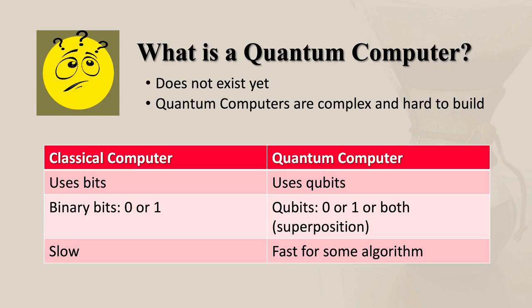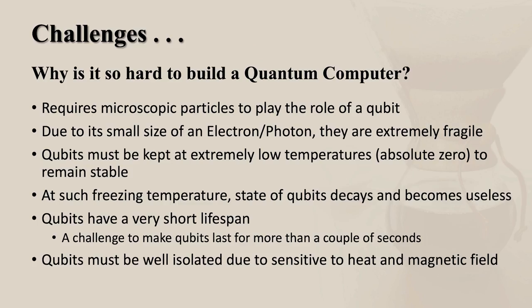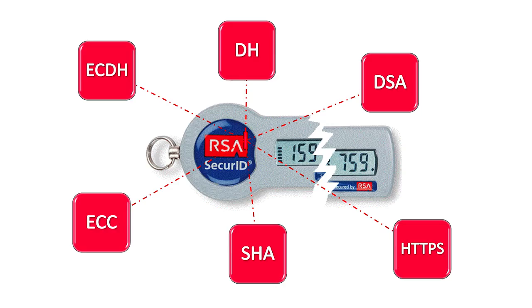However, the quantum future isn't going to come easy, and we have no idea how it will look when quantum computers do arrive. Quantum computing takes advantage of the ability of subatomic particles to exist in more than one state at any time. These tiny particles are extremely fragile, and it will be a challenge to maintain stability. Qubits have to be well isolated in controlled conditions; otherwise, the state of qubits decays and becomes useless.